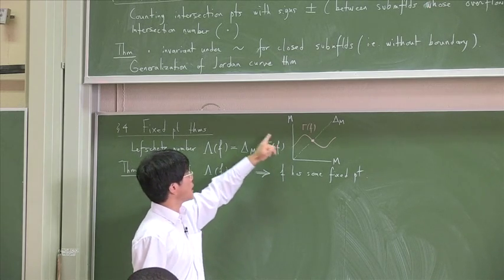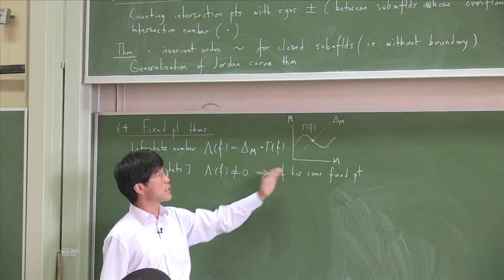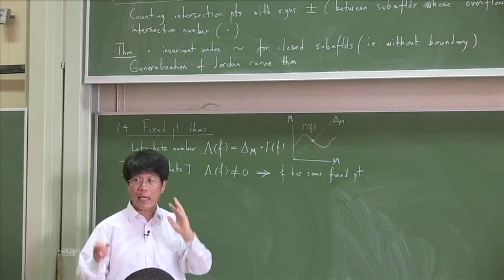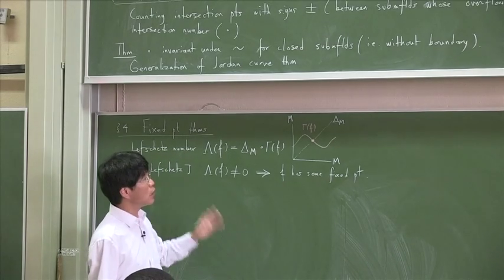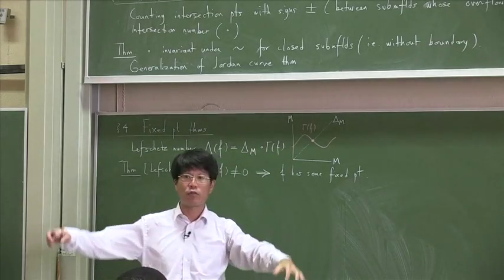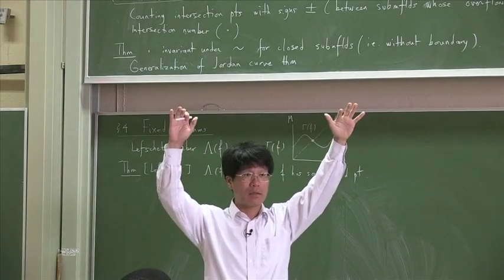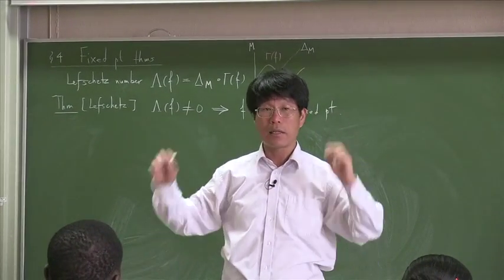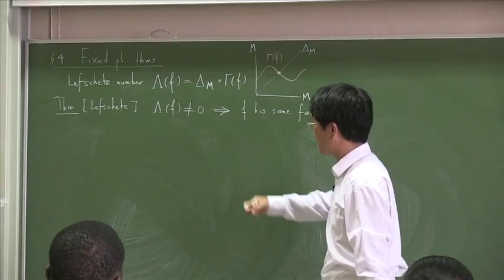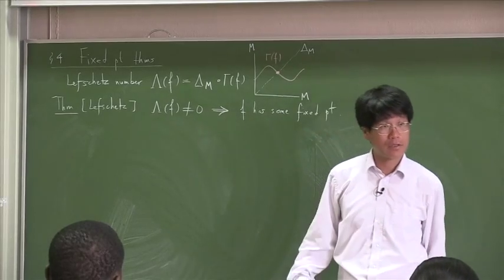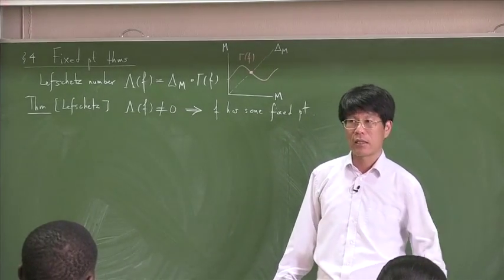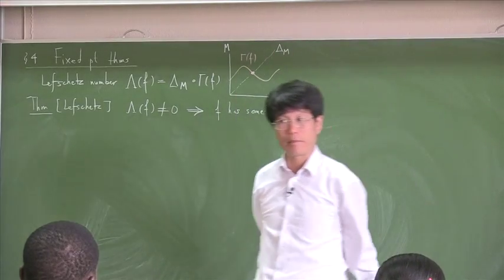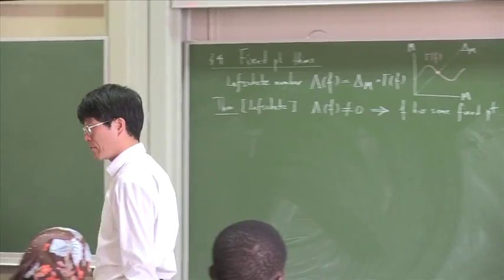If you want to find the Lefschetz number or fixed points of some map, as far as the number of fixed points is concerned, you don't have to use the original map. You can deform the original map to something much simpler and count the Lefschetz number for something much simpler, and then you know that that number is the Lefschetz number for the original map. A very beautiful instance of deforming a problem to something simpler and solving the problem in the simpler version.